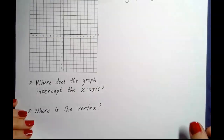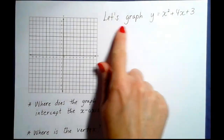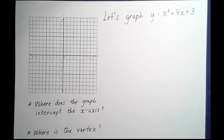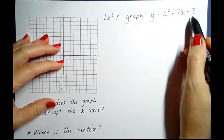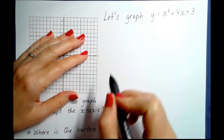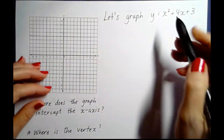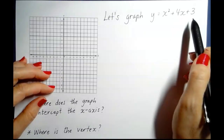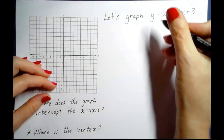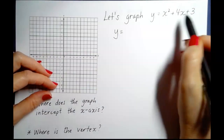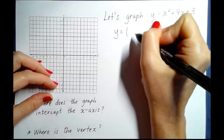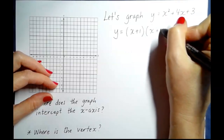We're going to start with this function: y equals x squared plus 4x plus 3. Remember, y and f(x) are interchangeable, so I'll use them often. This is a very simple quadratic expression and we can easily factor it. Factors of 3 that add up to 4 are 1 and 3, so y equals (x + 1)(x + 3).